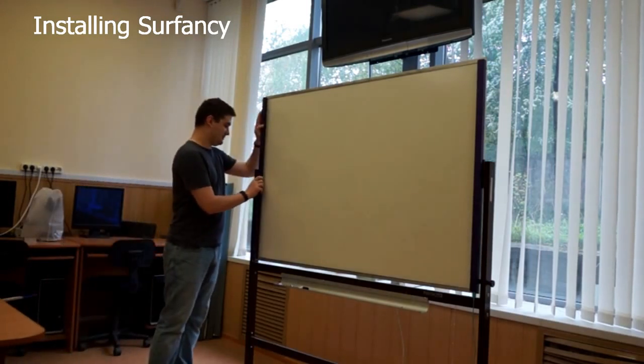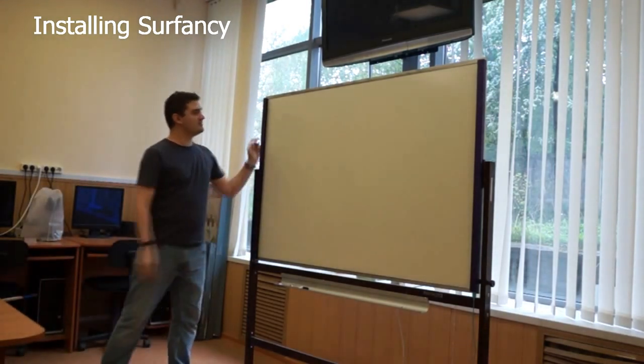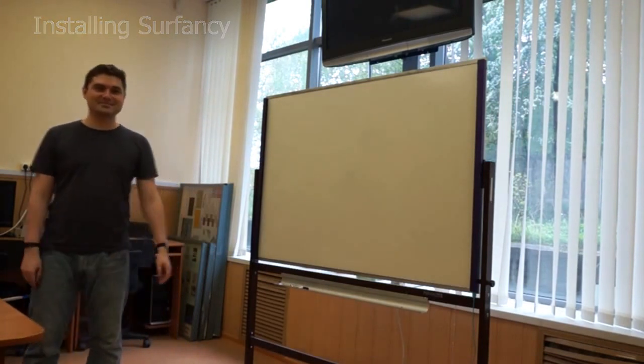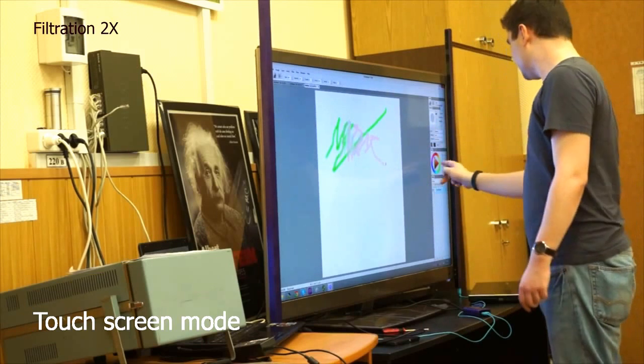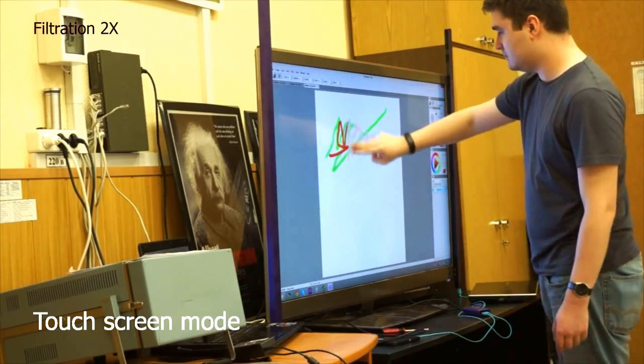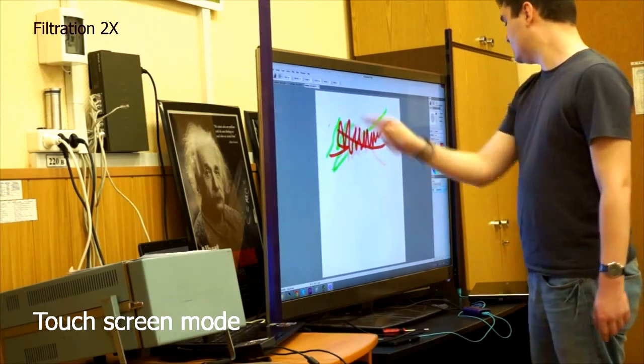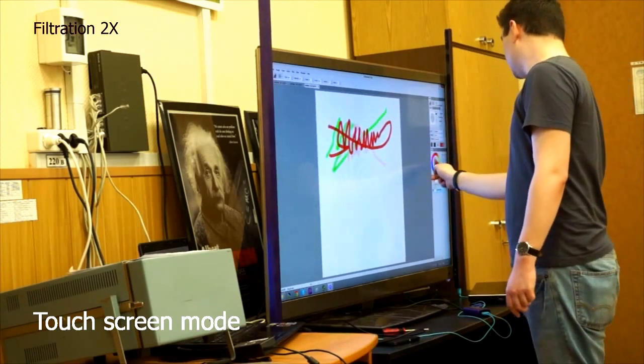Surfency is a kit of 1 meter long bars installed to a whiteboard creating a sensitive area 1 to 1.8 meters. Here, Surfency is installed on a 50 inch wide screen connected to a Windows laptop with high filtering level.